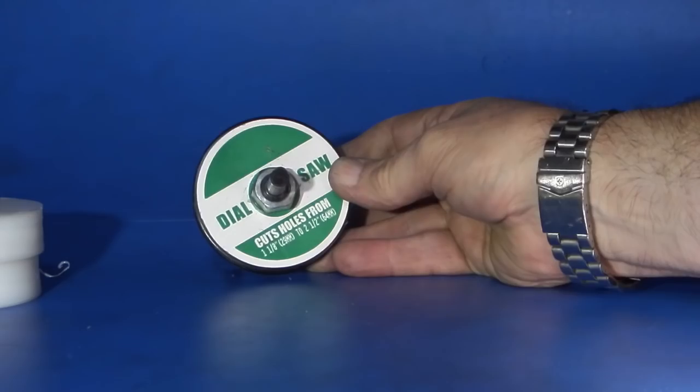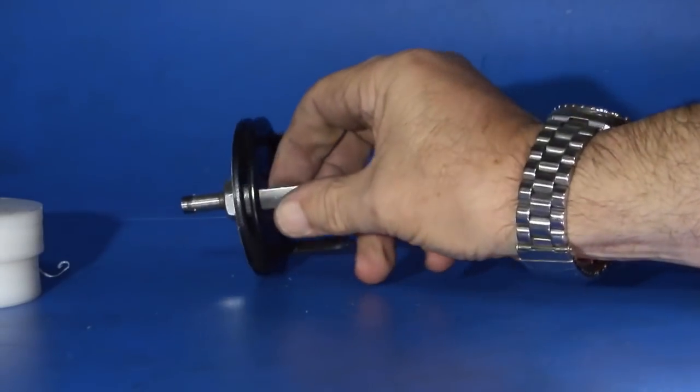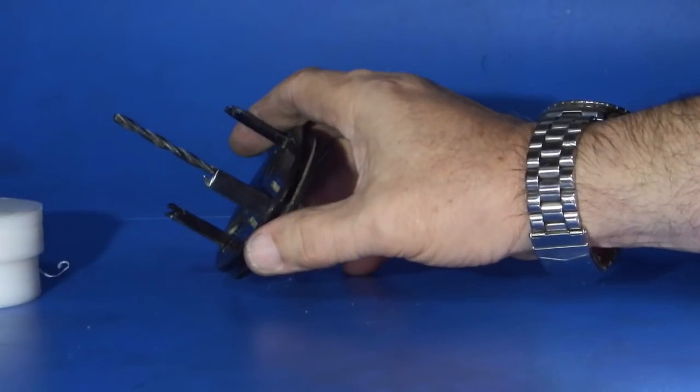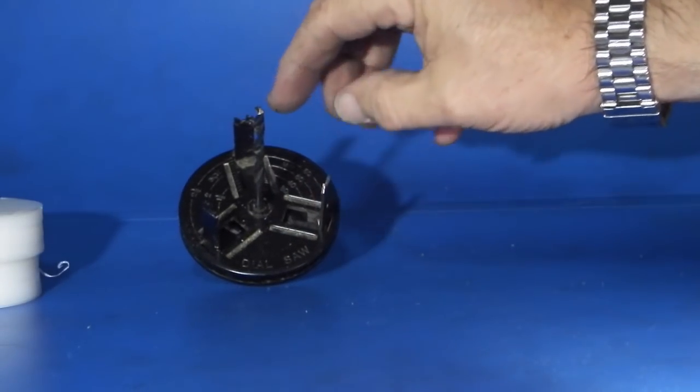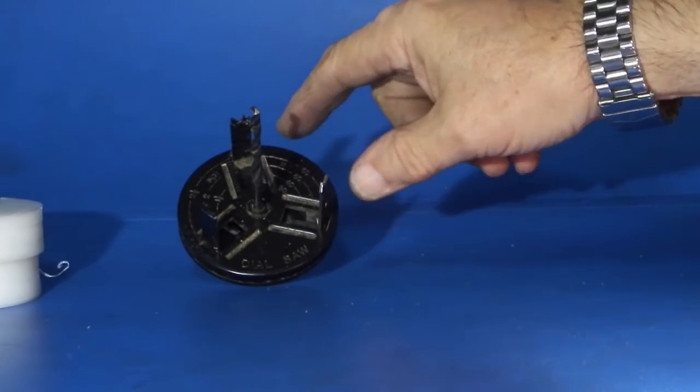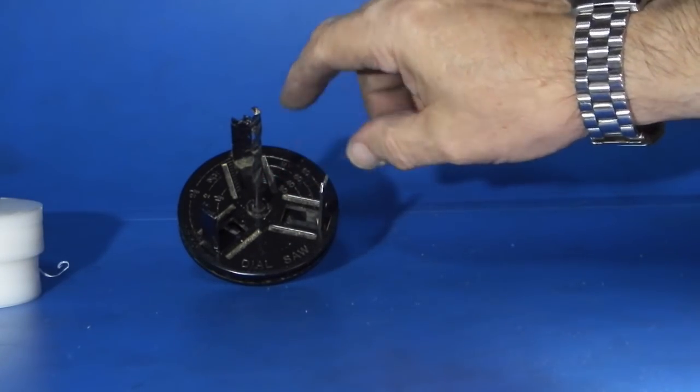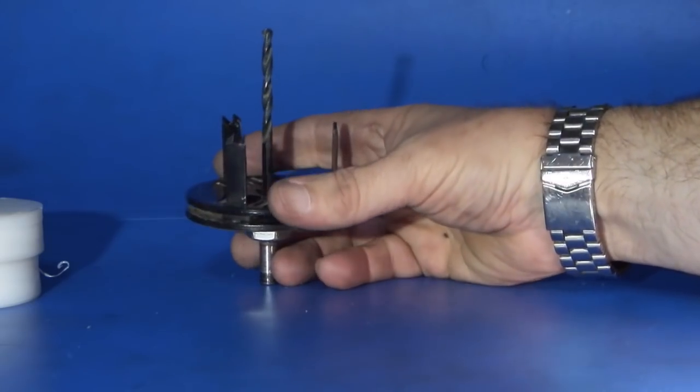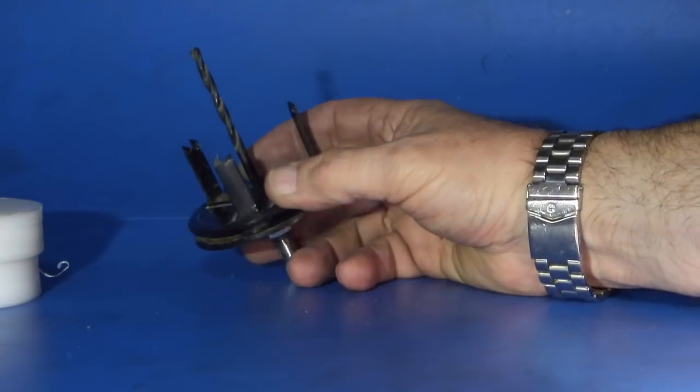It's called a dial saw and you can cut a hole from one and an eighth up to two and a half inches. It's got a fixed drill in the middle and these teeth around the edge will move in and out to give you the diameter you need. So I've set it at maximum, locked it up, and we'll see how that cuts.